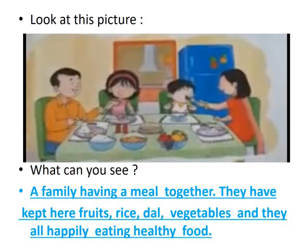Now look at this picture here, children. What can you see? This is a family having a meal together. They have kept here fruits, rice, dal, vegetables and they are all happily eating healthy food. What food items are there? Fruits, rice, dal, vegetables.